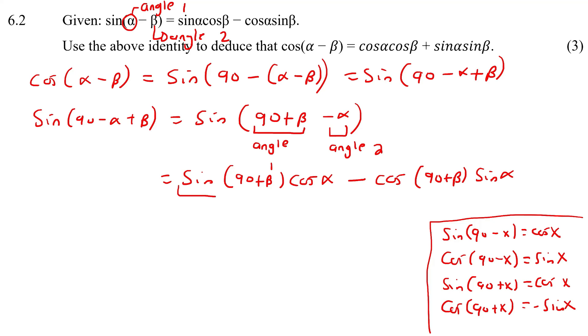So if I have sin of a 90 plus, then that's this one. Then it just becomes cos of that angle. Cos(α) I'm going to leave as it is. If I have cos(90 + β), then it actually becomes a negative. So I'm going to put -sin(β) and then sin(α). Now these two become a plus.